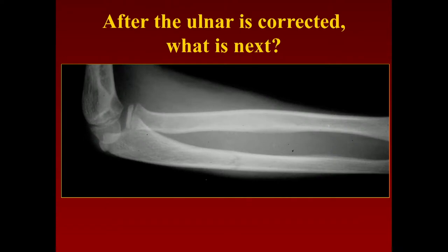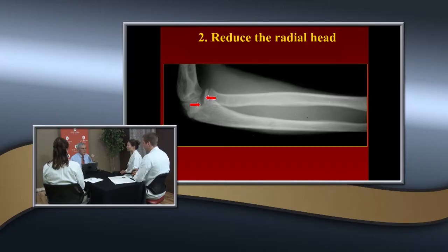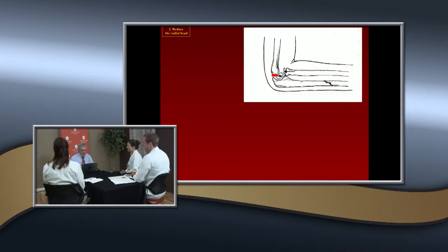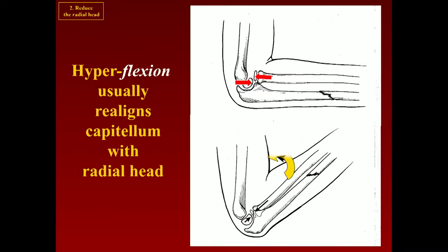Now you've got the ulna corrected — what's next? Your radial head may have already been reduced. If it doesn't reduce with that alone, you can see the fracture line has been reduced but the radial head is still out. How do you reduce it? It was a pronation injury so you supinate — but the primary thing, remember, it's an extension injury. So you hyperflect. Hyperflexion usually realigns the capitellum with the radial head.